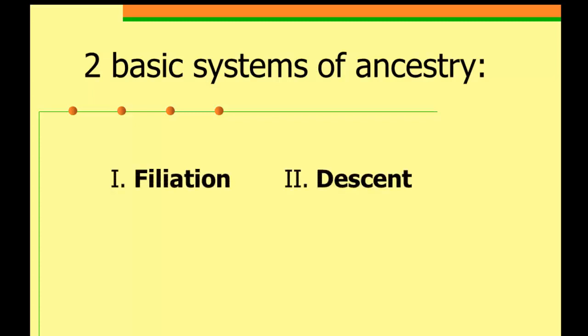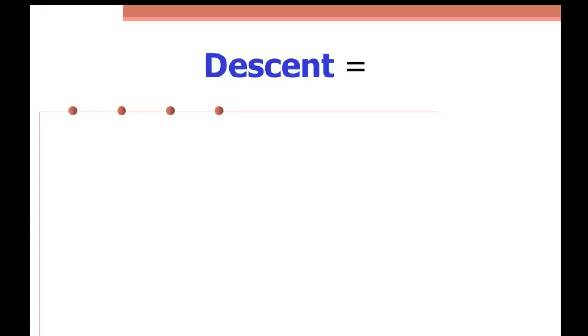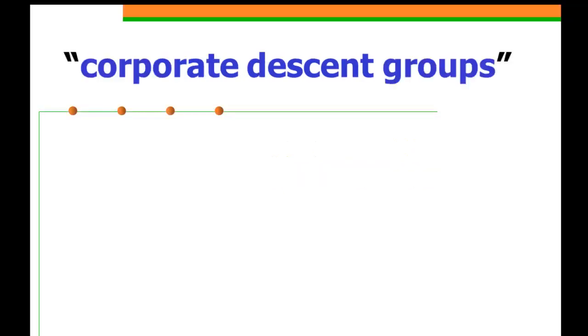So we've talked about bilateral affiliation, and that's one of the basic systems of ancestry. Descent is the second basic system, and in this presentation, we're going to focus just on descent. We're going to define descent as using shared ancestry to form corporate social groups. We'll discuss the meaning of a corporate social group in the next presentation. When a corporate social group is formed by descent, we call it a corporate descent group.